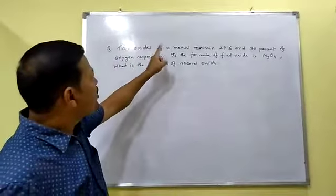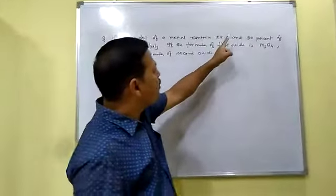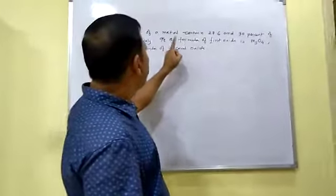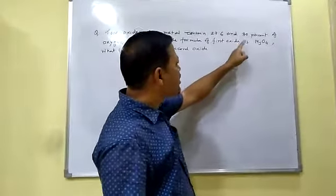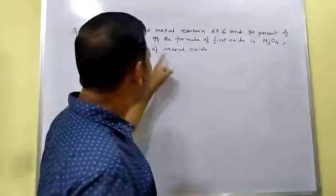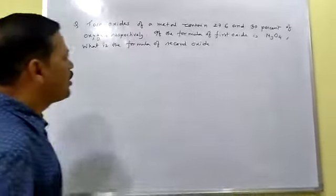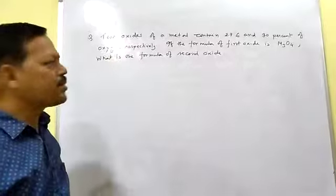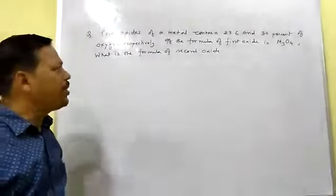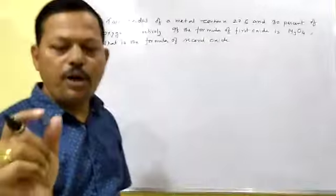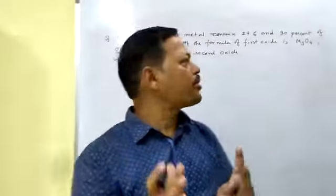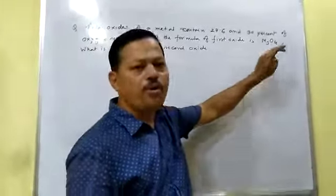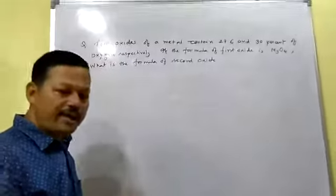This is your question: two oxides of a metal contain 27.6% and 30% of oxygen respectively. If the formula of the first oxide is M₃O₄, then you have to determine the formula of the second oxide. Metal oxides are formed when a metal combines with oxygen, and here two oxides are formed — the formula of one is given as M₃O₄, and you have to find the other.